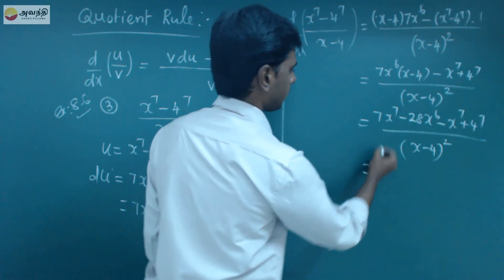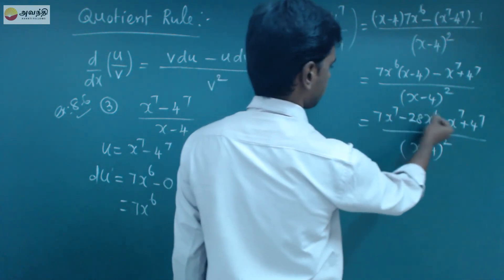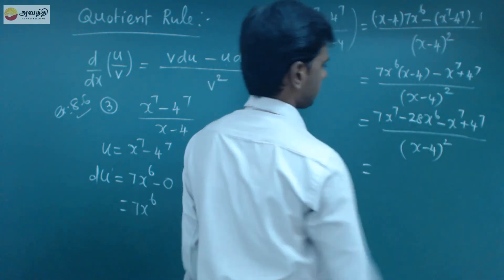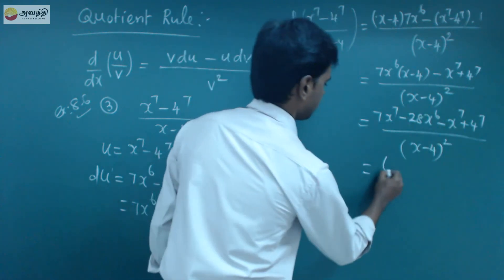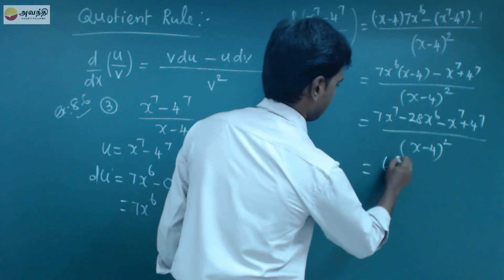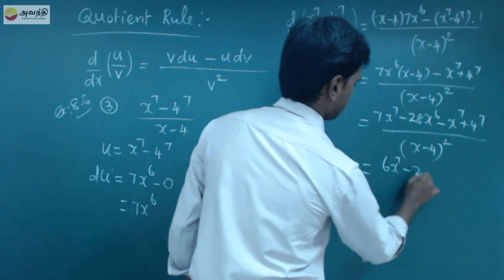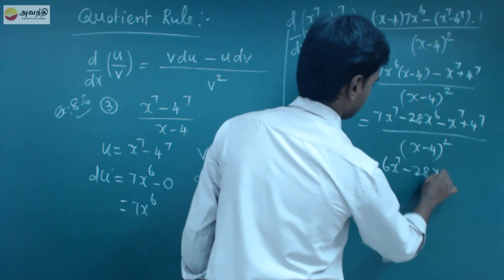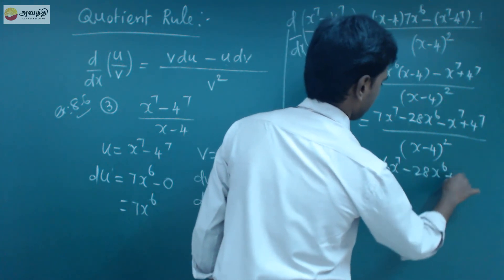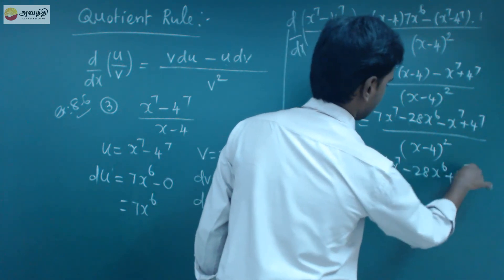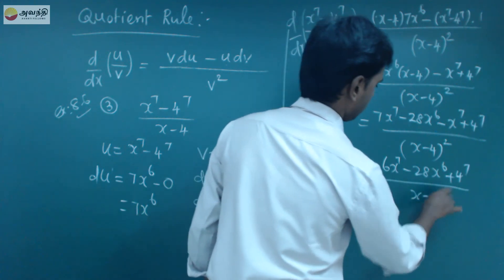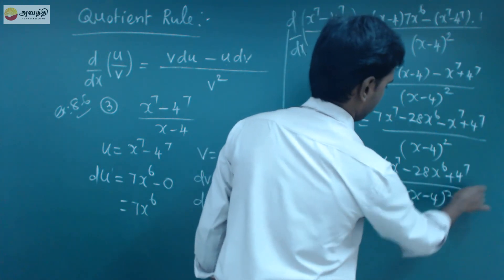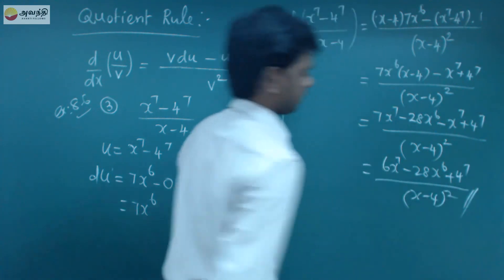So the numerator simplifies: 7x power 7 minus x power 7 gives 6x power 7, minus 28x power 6 plus 4 power 7. The final answer is: (6x power 7 minus 28x power 6 plus 4 power 7) divided by (x minus 4) the whole square.